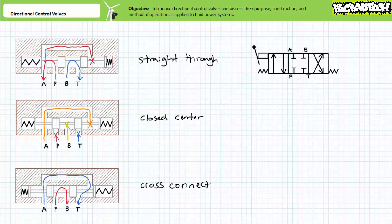Here are all three positions simultaneously. Other configurations like tandem, float, or open center would require either different internal passageways, different spools, or both. Long story short: as the spool slides the length of the barrel, the lands selectively block passages while the valleys selectively open others. The position of the spool as dictated by the actuation method therefore determines the position of the valve.